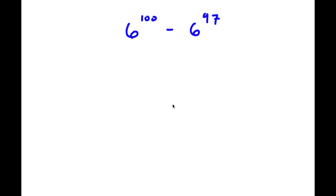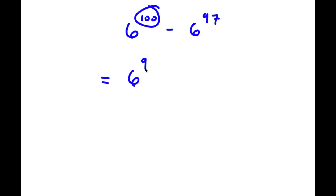So in this problem, I have 6 to the power of 100 minus 6 to the power of 97. The first thing I'm going to do is rewrite 100 as 97 plus 3. So now I have 6 to the power of 97 plus 3 minus 6 to the power of 97.